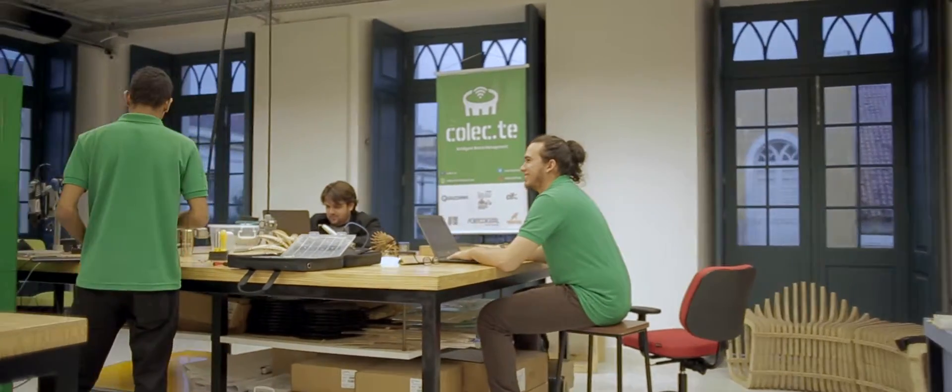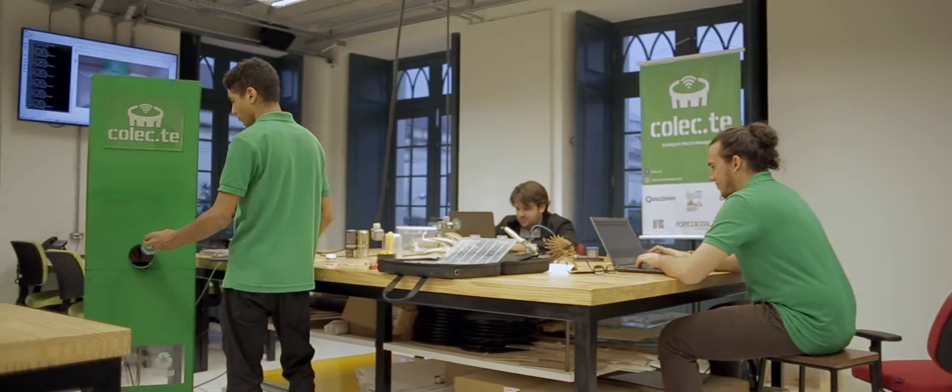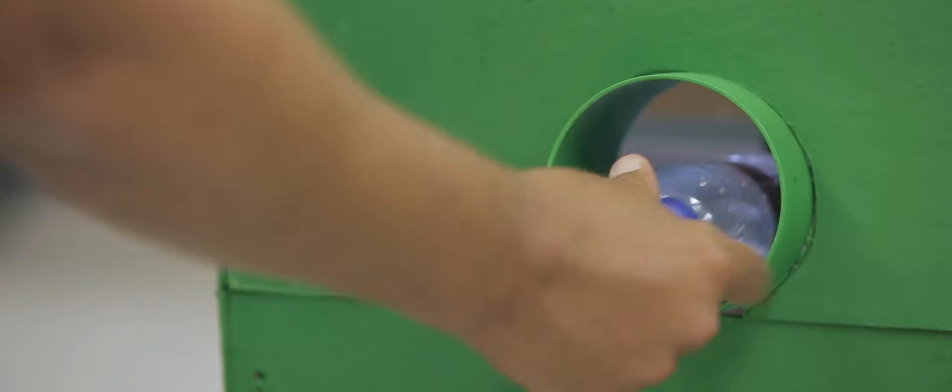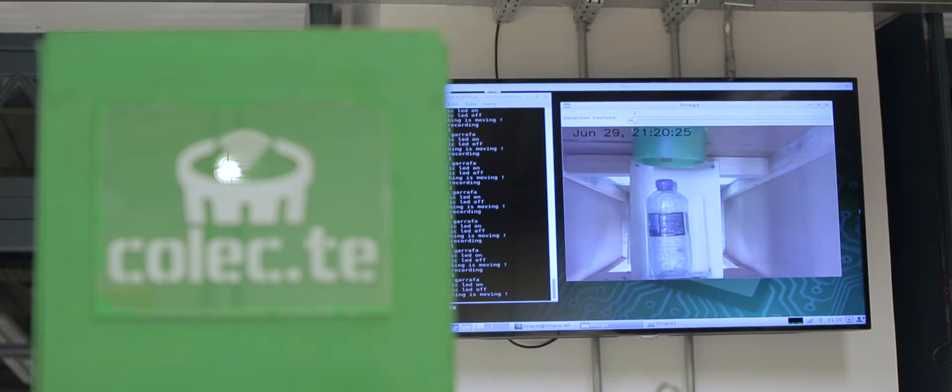Nós criamos uma lixeira inteligente que identifica e separa automaticamente o que foi descartado. A partir do momento que a pessoa insere o lixo nela, tem uma câmera que faz reconhecimento de imagem e tem alguns sensores que identificam que tipo de material foi descartado.